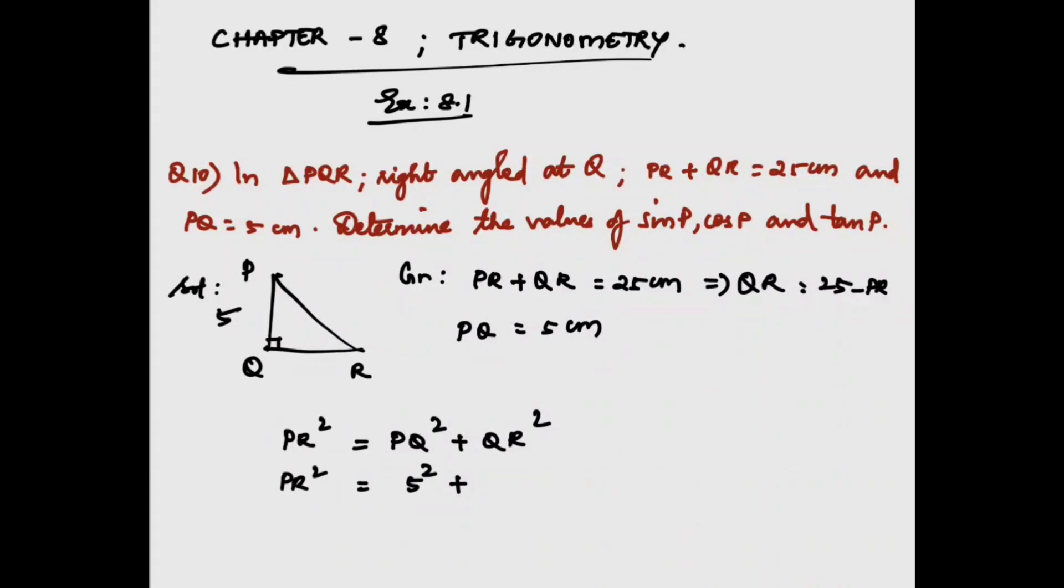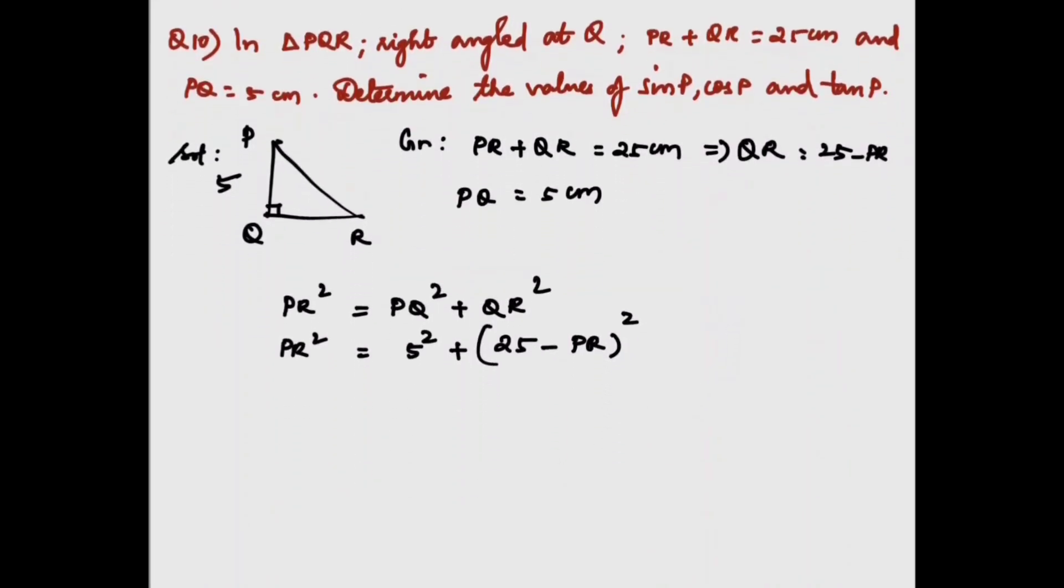and QR we have the value as 25 - PR. Substituting it, PR² = 25 + (25 - PR)². According to the property (a - b)² = a² - 2ab + b²...